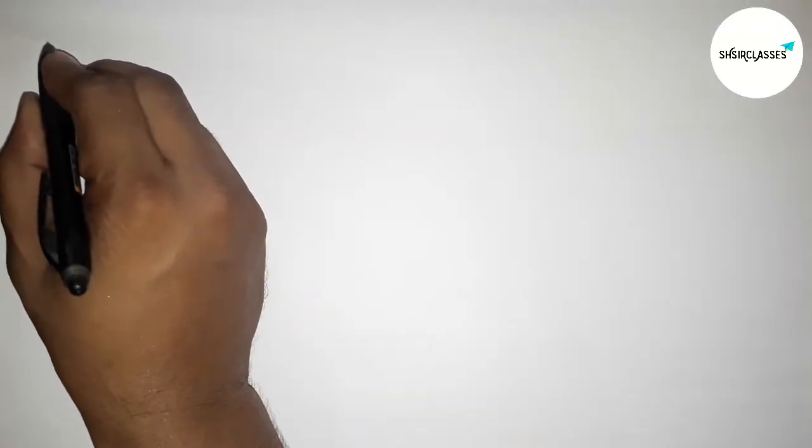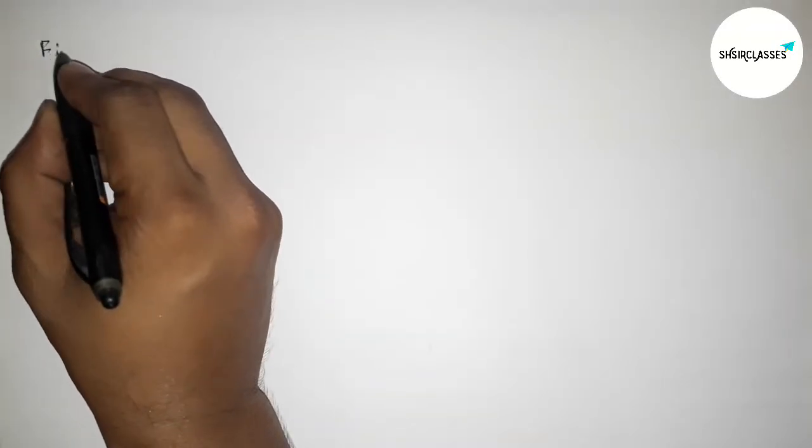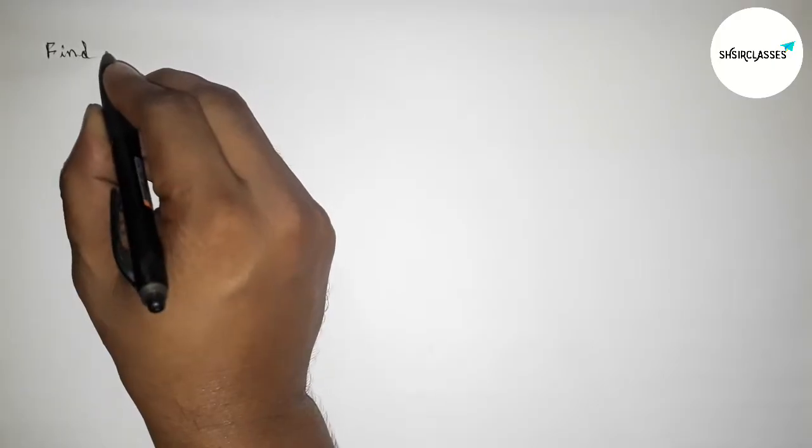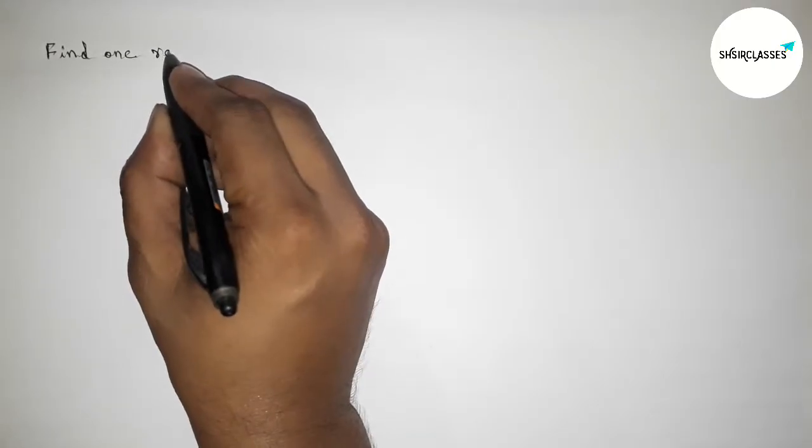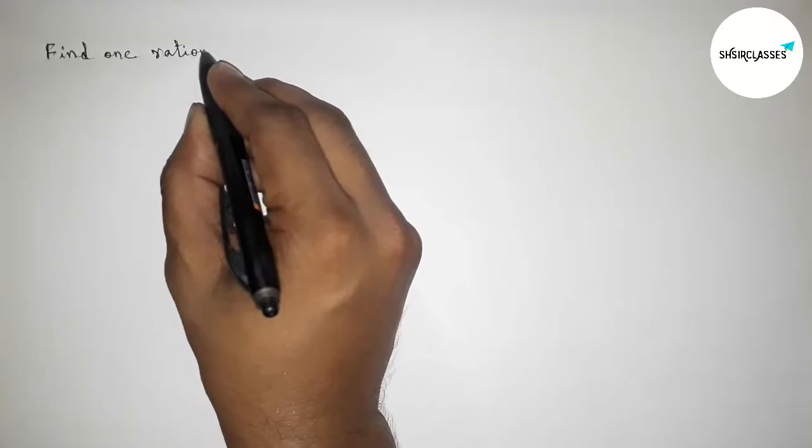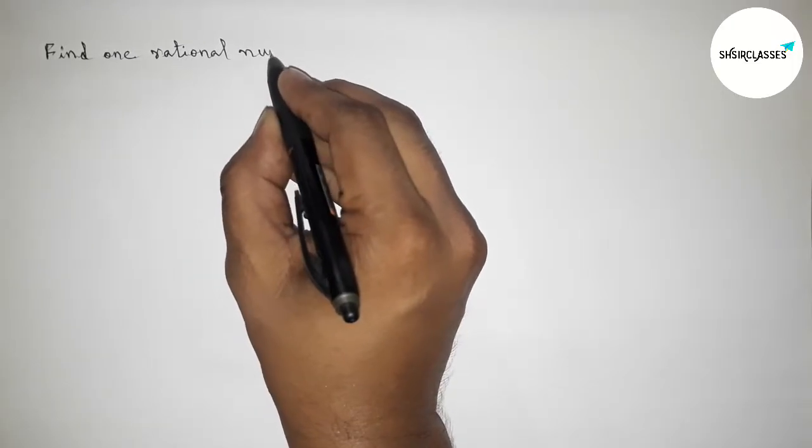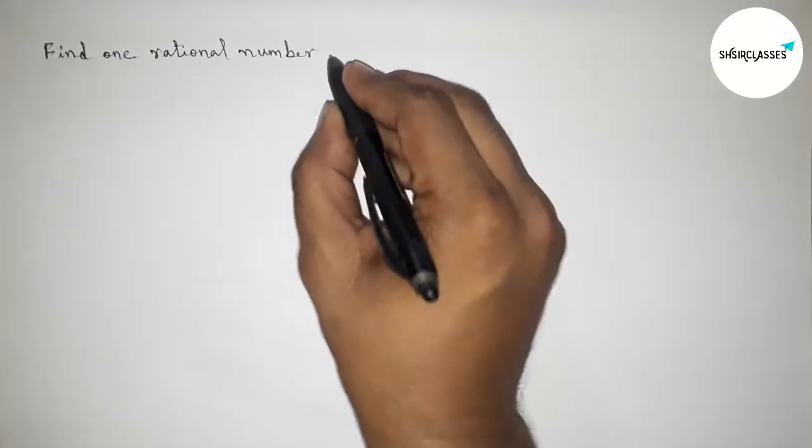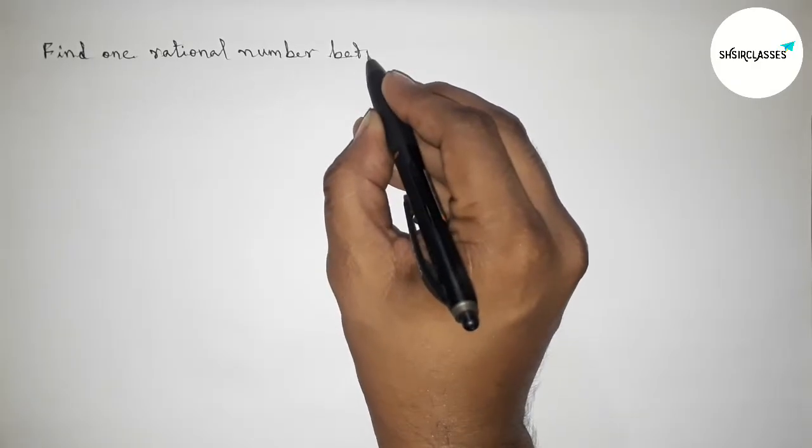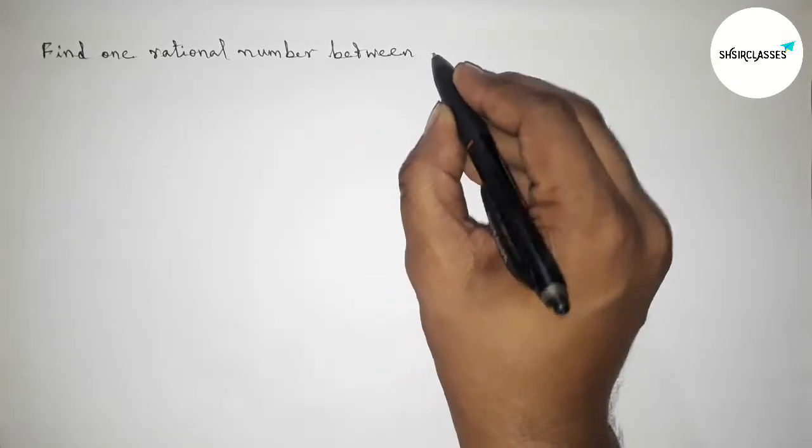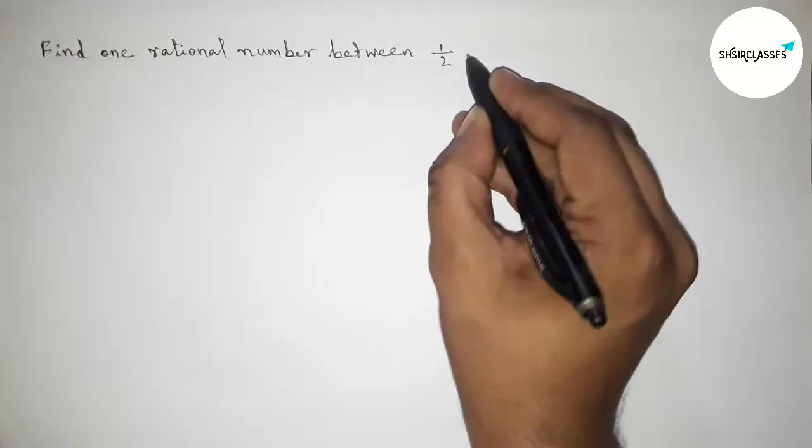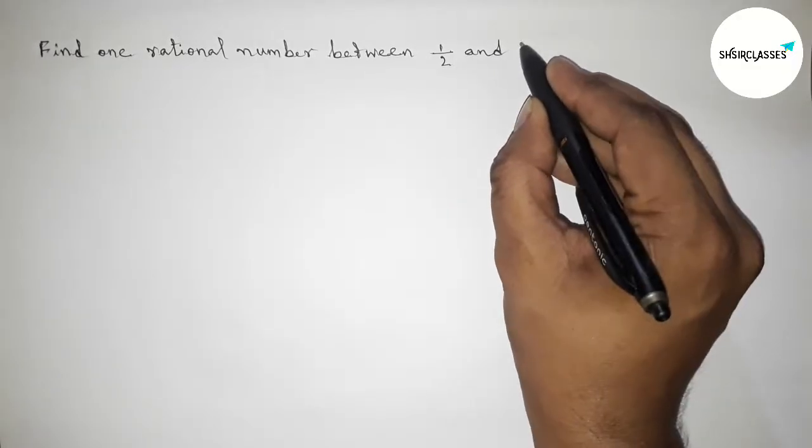Hi everyone, welcome to Share Classes. Today in this video we have to find one rational number between 1 by 2 and 2 by 5 in an easy way. So please watch the video till the end. Let's start the video.